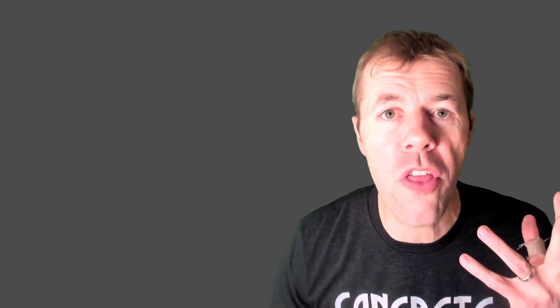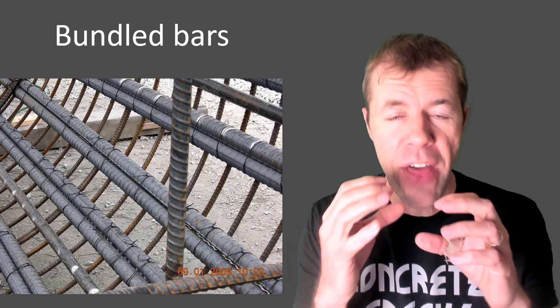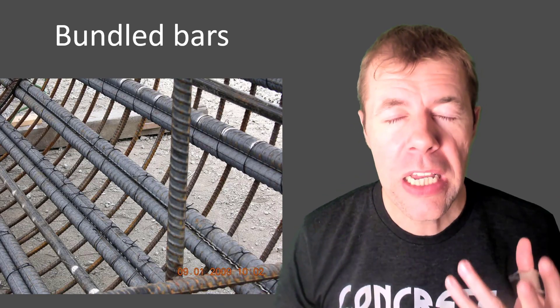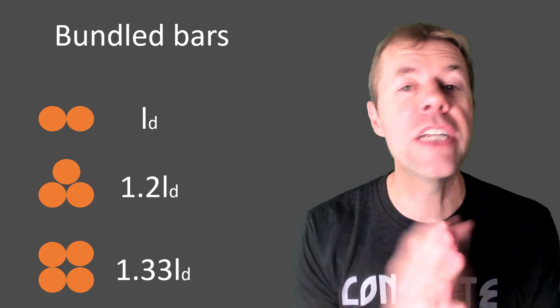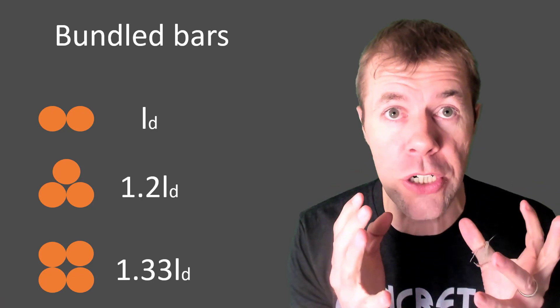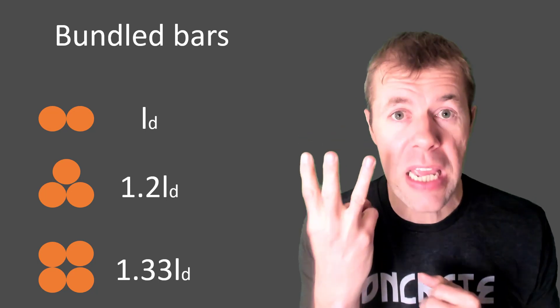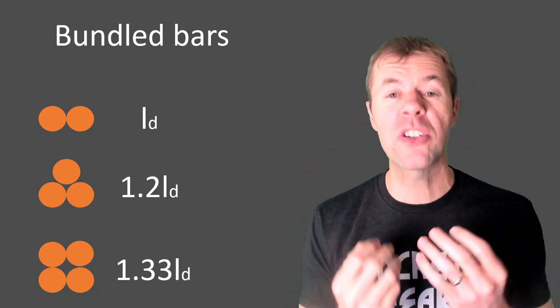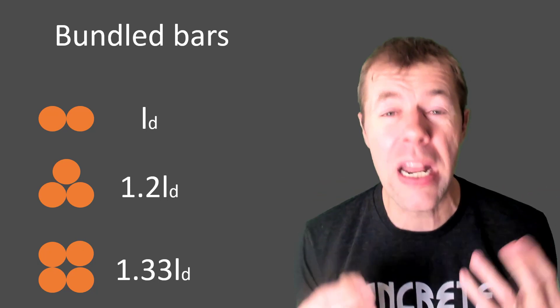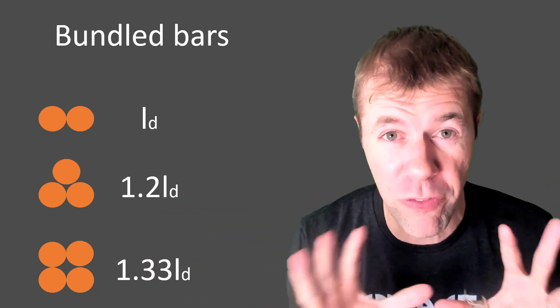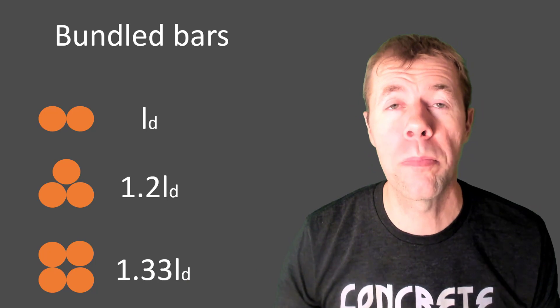Now, you might say, how about bundled bars? Bundled bars, what are those? That's when I have bars that are tied together. You can see them here in this column cage. And if I have two bars together, then I can just use the development length. The same equation I showed you before. If I have three, I have to increase that number by 20%. If I have four, I have to increase it by 33%. And I can't have more than four when it comes to bundled bars.